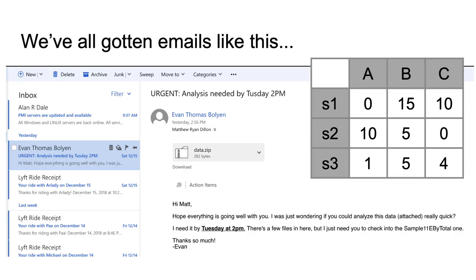It says: urgent analysis needed by Tuesday 2 p.m. It looks like it's from my colleague Evan Bolian. It says: hi Matt, hope everything is going well with you. I was just wondering if you could analyze this data attached really quick. I need it by Tuesday at 2 p.m. There are a few files in here but I just need you to check into the sample 11e by total one. So I look and I see there's a data.zip attachment, and I unzip it and I open up sample 11e by total and I see something that looks like this.